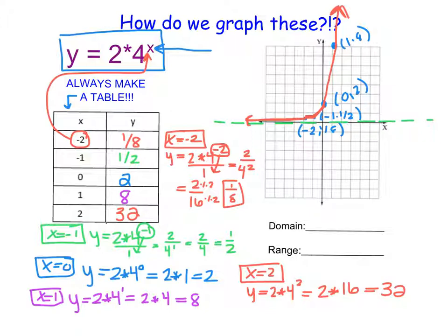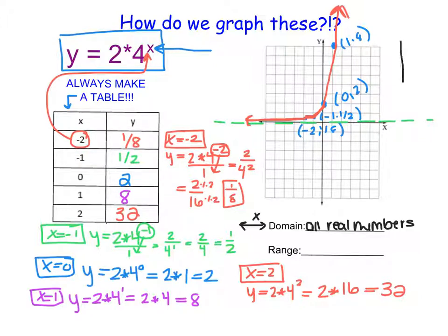Now we need to find the domain and range. The domain uses x values to create points on the graph. The graph goes forever to the left and forever to the right, so the domain is all real numbers. For the range, the graph goes up forever but only gets very close to 0 without crossing it — using all positive y values but not 0 itself. So the range is y greater than, but not equal to, 0.